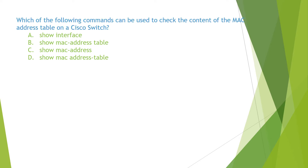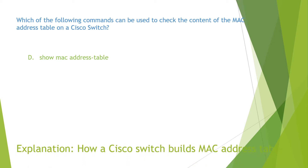The question reads: which of the following commands can be used to check the contents of the MAC address table on a Cisco switch? The command is 'show mac address-table', therefore the answer is D. You can find the detailed explanation in the video 'How a Cisco Switch Builds MAC Address Table.'